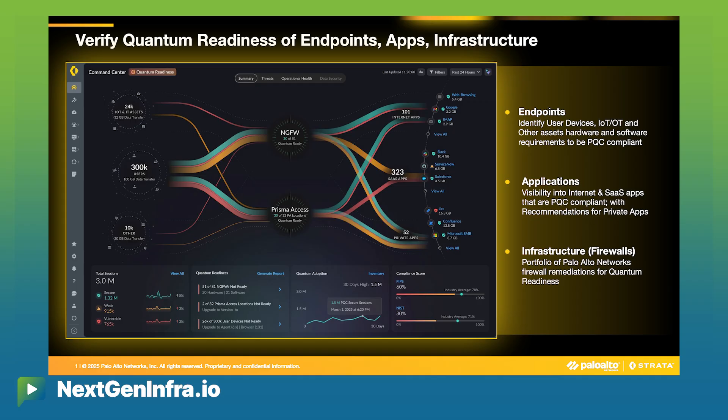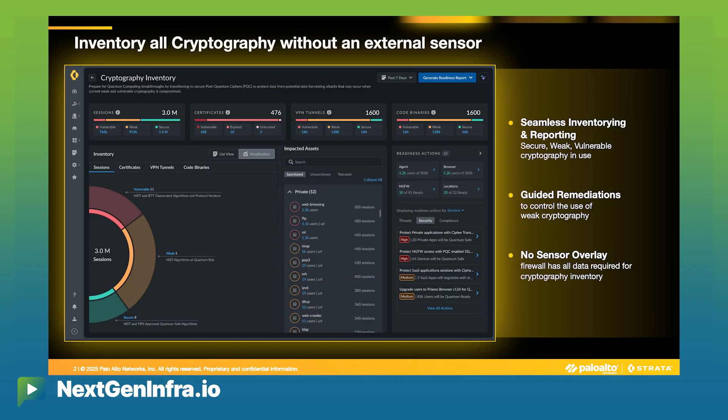If you think about your journey, it's really three steps. First, you need to plan — have a complete enterprise-wide crypto inventory. Once you have that, you can plan for your budget required for your hardware, your software, and your endpoint upgrades.